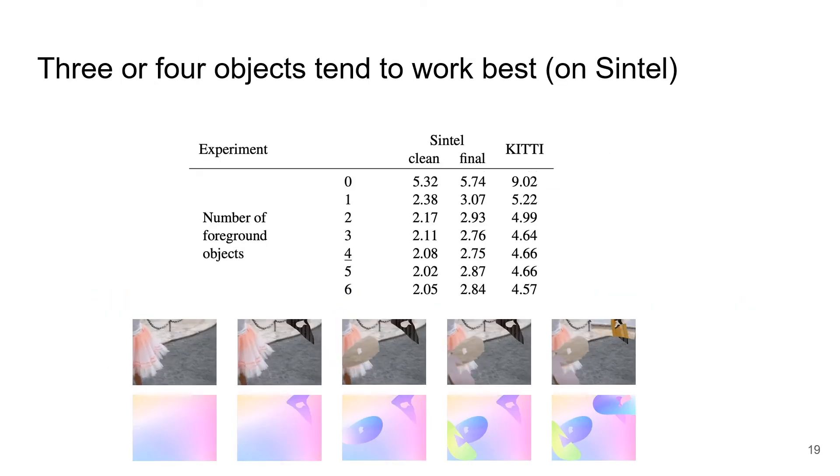Regarding the number of foreground objects, using only the background leads to significant performance loss. Using 3 or 4 foreground objects tends to work best for Sintel, while using more objects, such as 5, does not provide any additional gains.